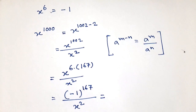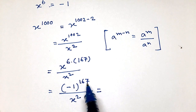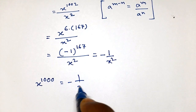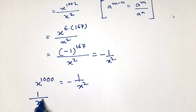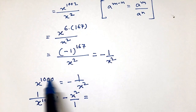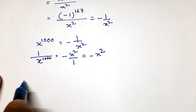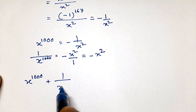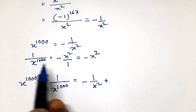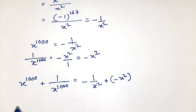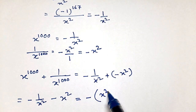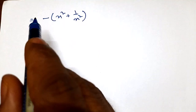Since 167 is an odd number, minus 1 multiplied an odd number of times is minus 1. So x^1000 = -1 divided by x². Therefore 1 by x^1000 equals minus x² by 1, flipping both sides, which is minus x². Our expression x^1000 + 1/x^1000 can be written as -1/x² plus (-x²), which gives minus 1/x² minus x², and taking minus common, that is minus (x² + 1/x²).